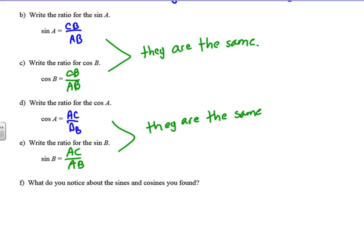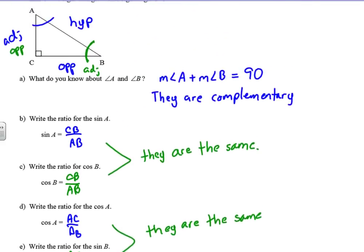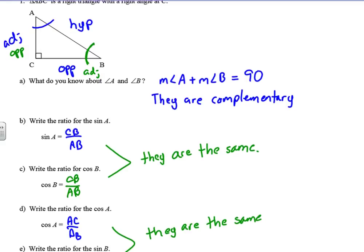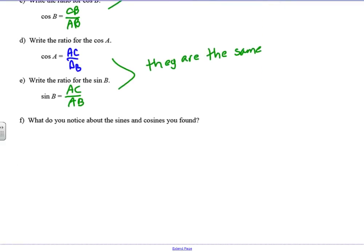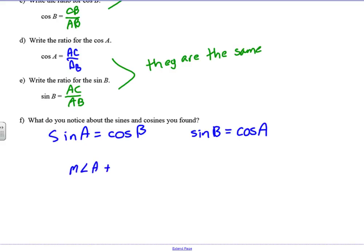So what do we notice about the sines and cosines we found? The sine of A equals the cosine of B, and vice versa. Those two things are equal to each other. And remember, the measure of angle A plus the measure of angle B equals 90. We're going to be able to extend this idea into any pair of complementary angles.